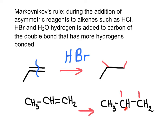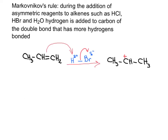Now explore how many hydrogens are present and which position will receive the electronegative atom — either Br, Cl, or OH. The central carbon has fewer hydrogens, so it will be the place to add the halogen. The carbon with two hydrogens will receive the hydrogen. But what is the rationale for Markovnikov's rule? This has to do with the mechanism of the reaction.